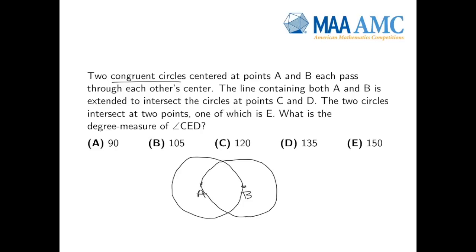Now, there's a line containing both A and B, so let's draw this horizontal line. And we extend it to intersect the circles at two other points. So we're just going to stretch this out in both of these directions, and they're going to intersect at two new points, C and D. And the two circles intersect at two points. Here's one, and here's the other. That's where the two circles intersect each other.